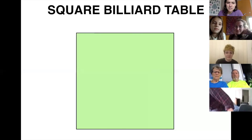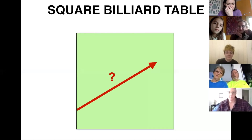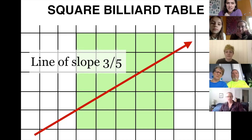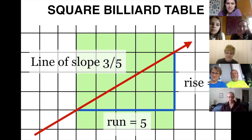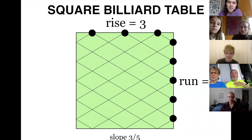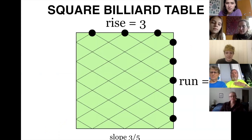Here's a square billiard table. If we shoot our ball in a rational direction — meaning the slope is a rational number expressible as a fraction — we get a periodic trajectory. Here's a line of slope 3 over 5: rise is 3, run is 5. It gives us a billiard path that bounces three times on the top and five times on the side, because 3 is the rise and 5 is the run — slope 3 over 5.